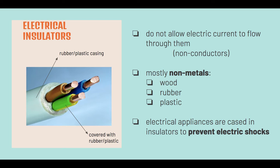Electrical insulators do not allow electric current to flow through them. They are non-conductors, mostly non-metals like wood, rubber, and plastic. Electrical appliances are cased in insulators to prevent electric shocks, and wires are covered in plastic and rubber for that purpose too.